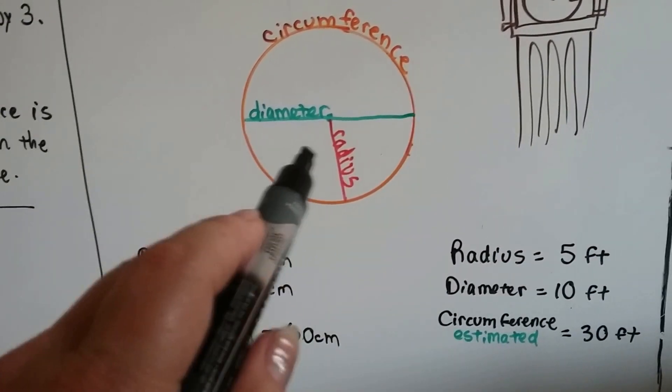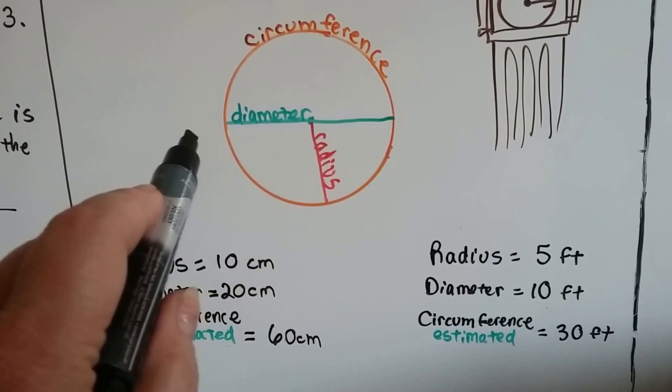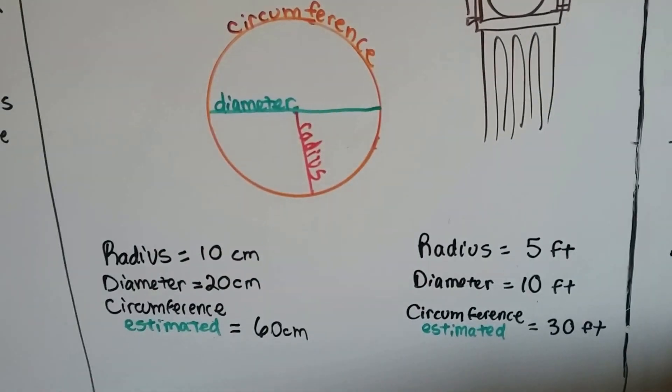If the radius is 5 feet, we can double that to 10 to get the diameter, and then just multiply that by three to get an estimated circumference.